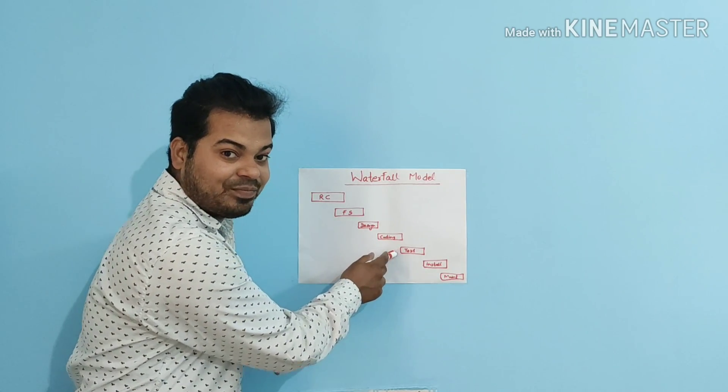Now I'm going to tell you the advantages of choosing a waterfall model. If you select the waterfall model, your quality of the product will be good. Since requirement changes are not allowed, chances of finding a bug will be less — this is an advantage for the developer since he need not recode again and again. Also, initial investment will be less since testers are hired at the later stage of the cycle.